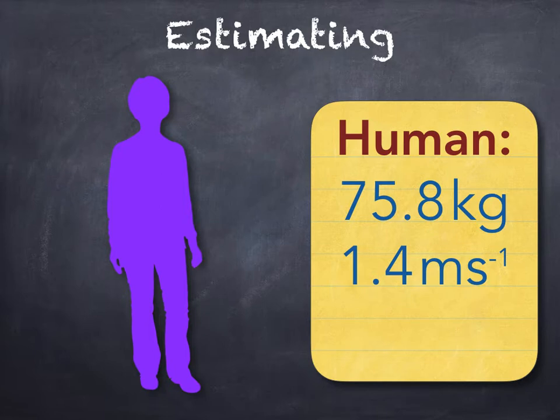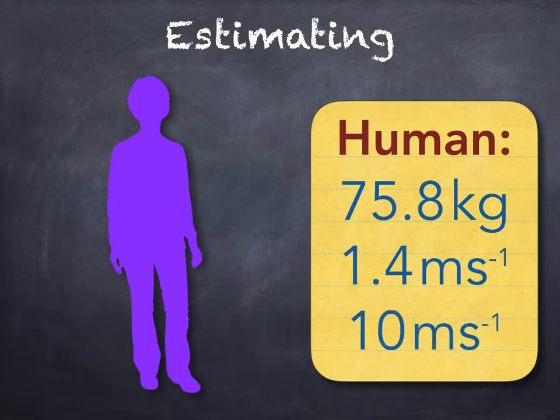And finally, what about the speed of an Olympic 100 meter sprinter? This is probably easier to estimate. If the time is around about 10 seconds, then that would give an average speed of roughly 10 meters per second.